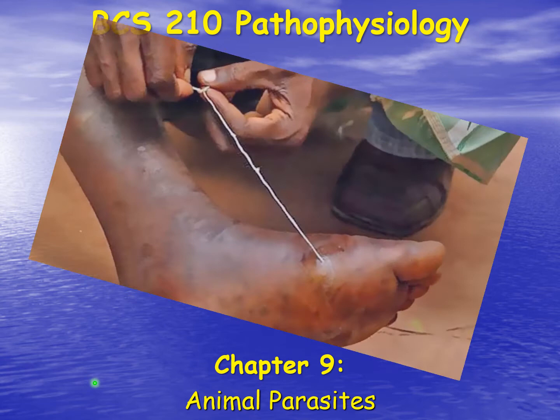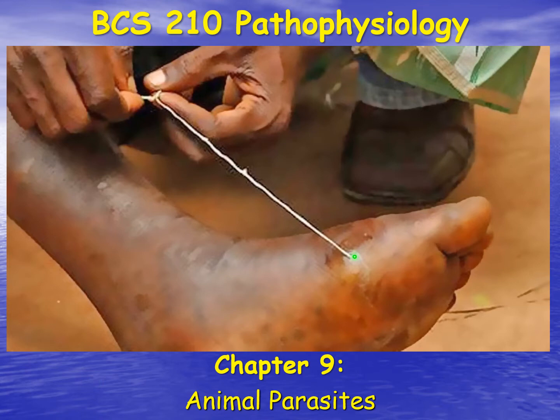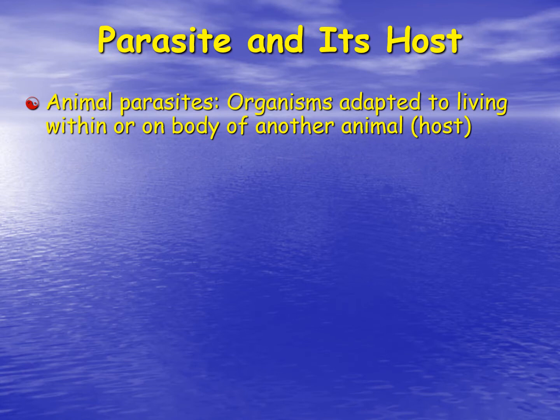Welcome to chapter 9. In this chapter we are going to discuss animal parasites. This picture is actually of an organism called the guinea worm. These will infect into the lower epidermis and dermis of the skin and then have to be drawn out very slowly over time. They're actually wrapping the parasite around a stick and they'll do this over several days. Otherwise the worm will break and actually cause severe inflammation in this area.